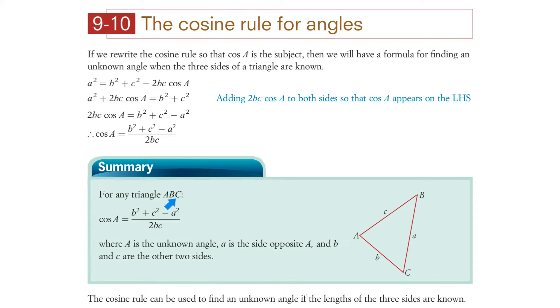Summary. For any triangle ABC, again that looks like a right angle triangle but that's any triangle. Cosine of A, that's that angle there, is equal to B squared plus C squared minus A squared all divided by 2 times B times C.